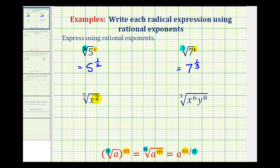And for the fifth root of x to the second, again, the index is five, the exponent is two, so this is equal to x raised to the two-fifth power.